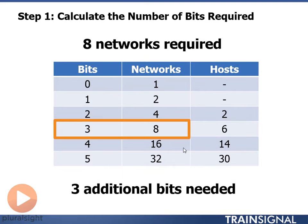In our particular case, we only need 8 networks, and 8 networks requires 3 additional bits. Now let's look at how to calculate each one of the network addresses so that we can assign those addresses to each of our sites that need network connectivity.